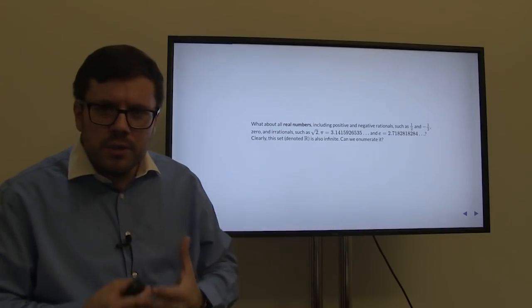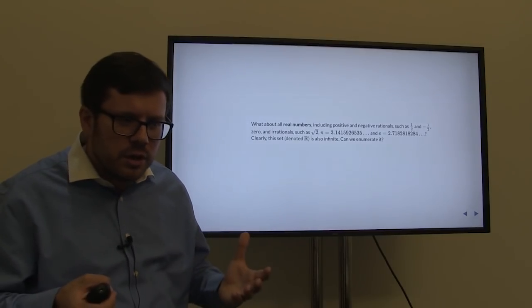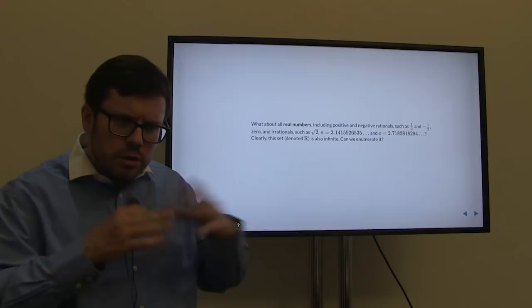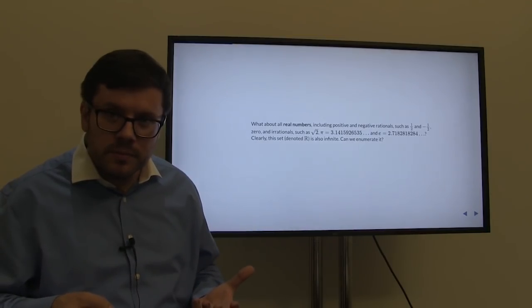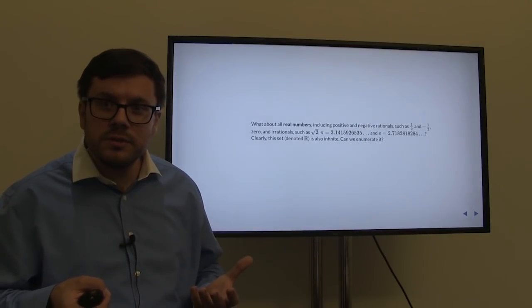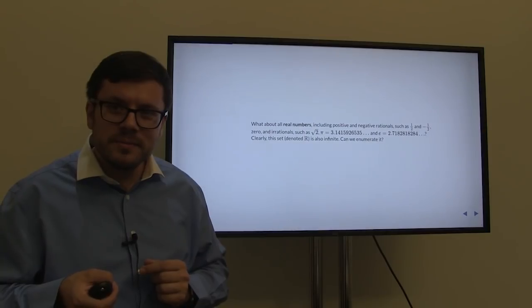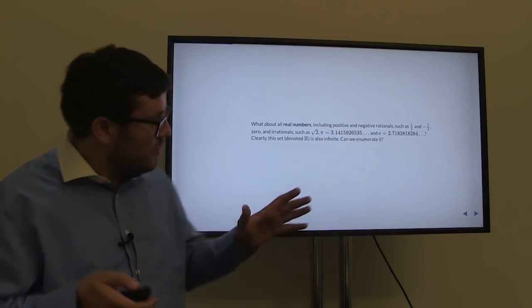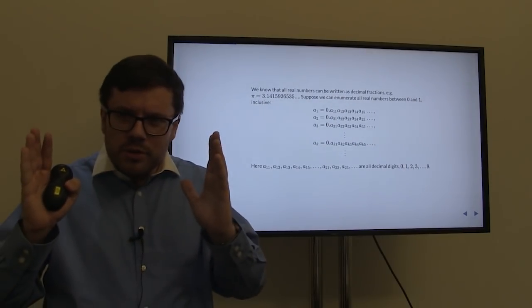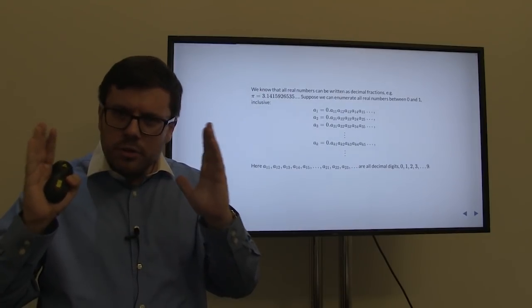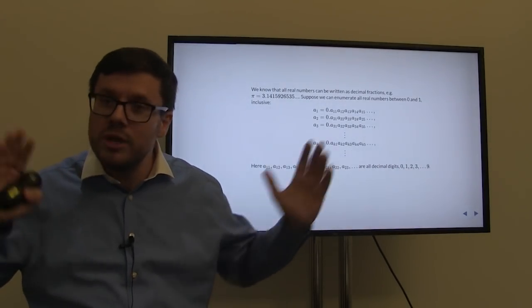If we take all these numbers — rationals and irrationals — this gives us the set of real numbers. Here is a question: is the set of real numbers enumerable? Let us consider all the real numbers between 0 and 1. It is well known that every real number can be written as a possibly infinite decimal fraction. If it's 1/2, for example, which is a rational number, it has a finite decimal expansion: 0.5. But we could not have a finite or periodic decimal expansion for pi, though we could still write it down.